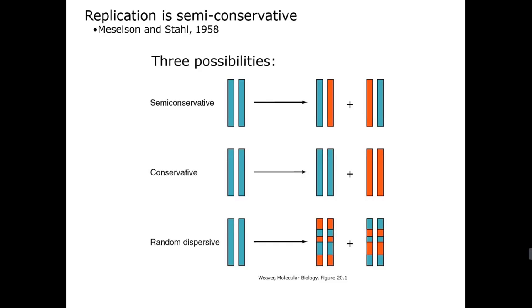And then there's this sort of non-random dispersive model that involves sort of a suspicion that perhaps you couldn't unwind the complementary DNA strands without causing some kind of backbone breakage.